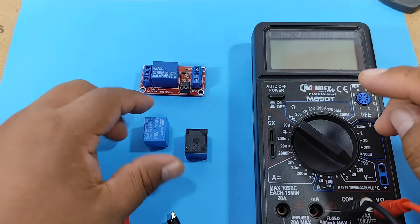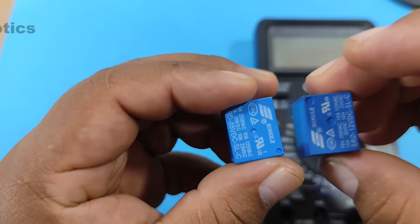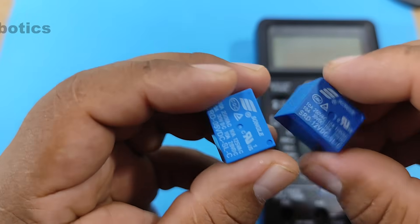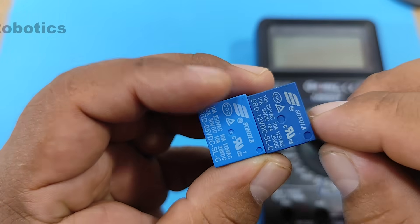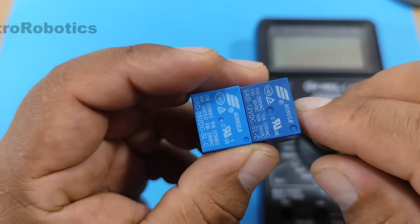Before assembling the electronic board, let's see which relay is more convenient to use, the 5 volt relay or the 12 volt relay. To do this, we'll measure its DC current consumption.